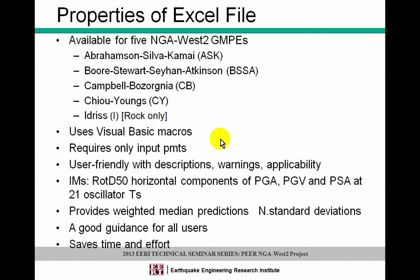Users may not have much background information about the GMPEs, but throughout the process I created a very user-friendly spreadsheet where you will get descriptions of the parameters, errors, and warnings, so you will be guided throughout the process. As output, you will get the ROTD50 for PGA, PGV, and PSA at 21 oscillator periods. Overall, this spreadsheet is very good guidance for all users and will save you a lot of time and effort.